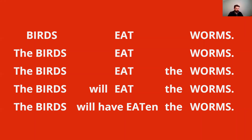Here is a sentence repeated multiple times. Each time, some function words are added but no new content words. The idea is that as we add function words, the amount of time it takes to say each sentence does not change — even though there are more words and more sounds. This represents how English is a stress-timed language. There are only three stressed words, whether we deal with the first sentence or the last, so they all take the same amount of time. Let's listen to how function words get squished or grouped in with the stressed unit near them.